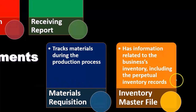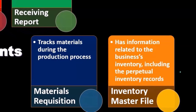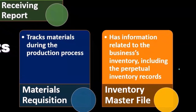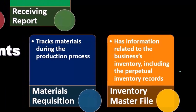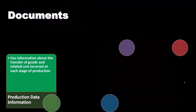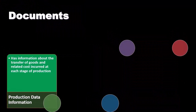Then we have the inventory master file, which has information related to the business's inventory, including the perpetual inventory records. This gives us the perpetual inventory records — kind of like the subsidiary ledger we think of with accounts receivable and accounts payable — providing the detail we need with regards to inventory.